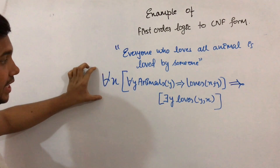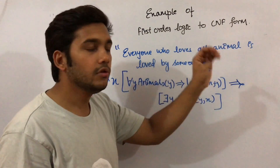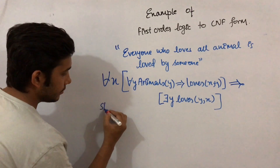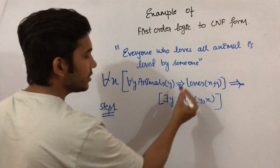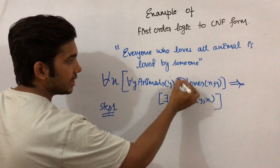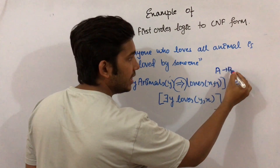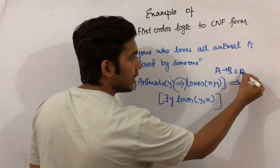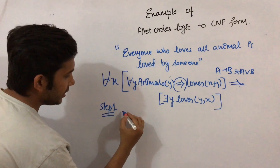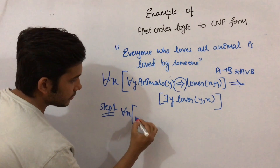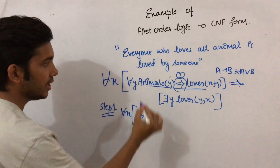Now we have to convert this predicate logic into Conjunctive Normal Form. In step one, we remove all the implications. There are two implications in our expression. To remove an implication: if A implies B, then it can be written as (not A) or B. So we write: for all X, for all Y — for the first implication, this is A and this is B.